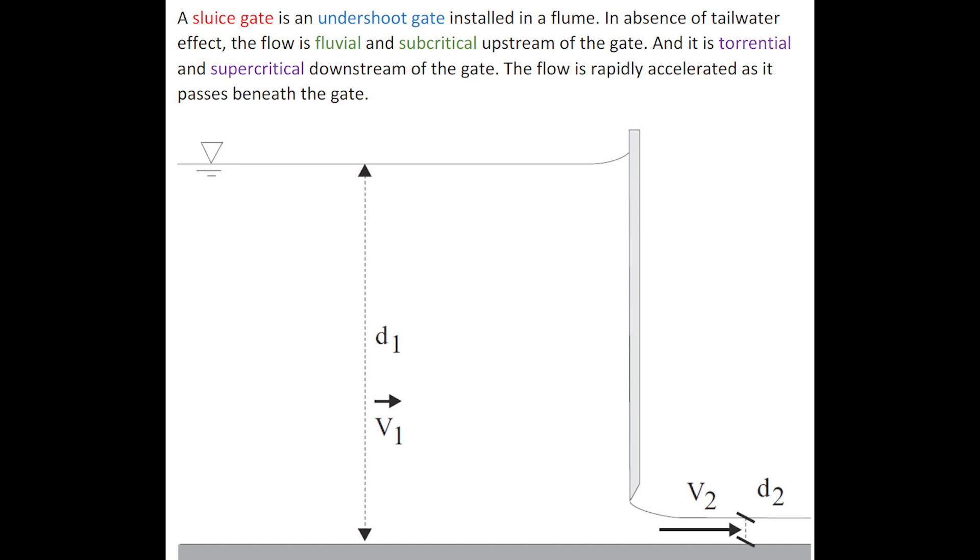A sluice gate is an undershot gate installed in a flume. In absence of tailwater effect, the flow is fluvial or subcritical upstream, and it is torrential or supercritical downstream, with the flow being rapidly accelerated as it passes beneath the gate.